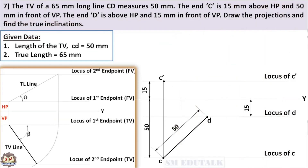Look at this drawing to recollect the line drawing procedure. Usually, the first end point locus lines are closer to the XY line, whereas the second end point locus lines are away. But in this problem it is different. The locus of C is away from XY, and the locus of D is closer to XY. Anyway, we are going to use the same drawing procedure — there is no change. As per the procedure, the top view line should be rotated to the first end point locus of the same view, that is the locus of C.